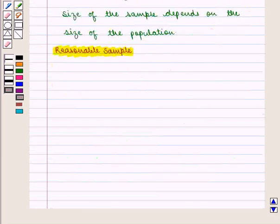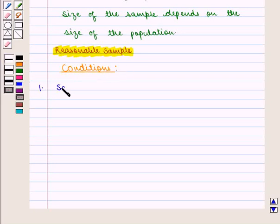Now we are going to discuss reasonable sample. Now question arises, how can we select samples which gives us the most accurate conclusion or prediction? Chosen sample gives us the correct inferences about the population if it satisfies the following conditions. And the first condition is: Sample should be selected at random.